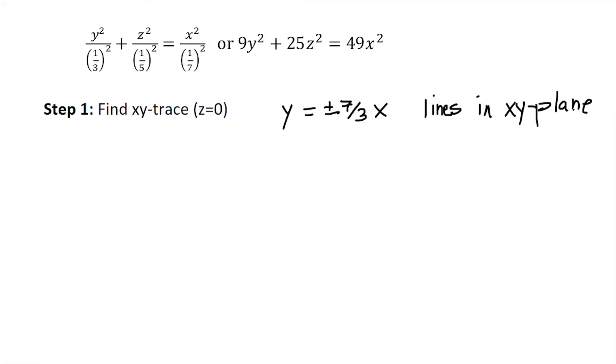I might even find some points if you like. If x = 1, y would equal ±7/3, and of course z would equal 0. I could get some more points if I needed to.